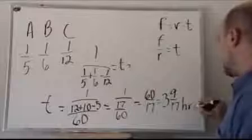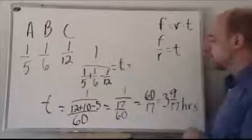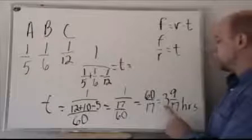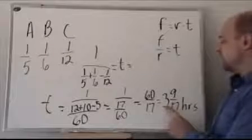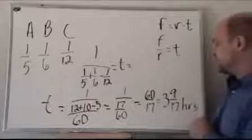And of course, the unit is hours. So even though C is pumping out a little bit of water, A and B are working a lot faster. And altogether, even with C's detraction, we will finish this tank. A and B will finish filling up this tank in three and nine seventeenths hours.